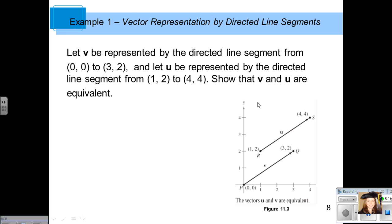Here's an example. We're going to let V, the bold V, be represented by the directed line segment from the point (0,0) to the point (3,2). On the picture here, our vector begins at P and ends at Q, our initial and terminal points respectively. We're going to let U be the directed line segment beginning at the point (1,2) and ending at the point (4,4). We want to show that vector V and vector U are equivalent. In order for those two vectors to be equivalent, they have to be the same length, and they have to be going in the same direction.